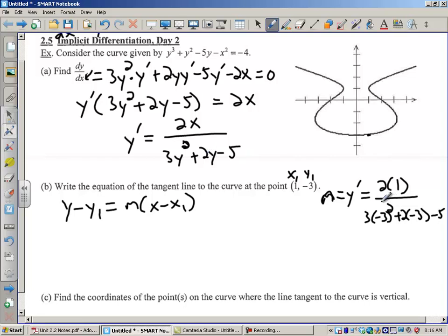Now, I did this earlier, and I'm pretty sure I got 1/8, but I'm going to check it again. It's going to be 2 over negative 3 squared is 9 times 3 is 27 minus 6 minus 5, which is 2 over 16, which is definitely 1/8. So my equation is going to be y plus 3 equals 1/8 times x minus 1. That would be the equation of the tangent line to this curve at the point (1, -3).